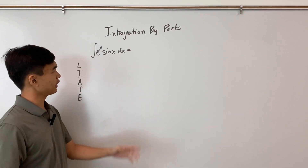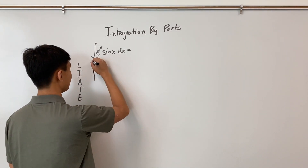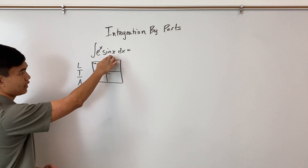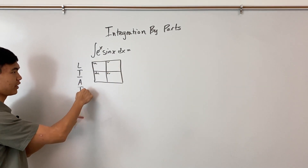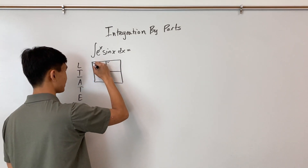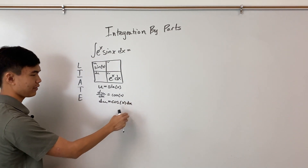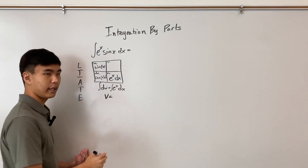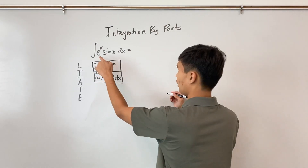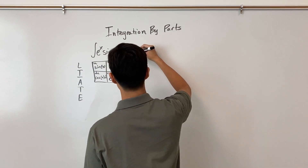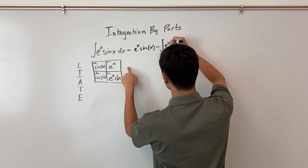There are some instances where integration by parts may seem to go on forever. For example, the integral of eˣ sin(x) dx. Setting up the box: eˣ is exponential and sin(x) is normal trig, so sin(x) ranks higher, giving u equals sin(x) and dv equals eˣ dx. Differentiating gives du equals cos(x) dx, and integrating gives v equals eˣ. Applying the formula: the integral equals eˣ sin(x) minus the integral of eˣ cos(x) dx.